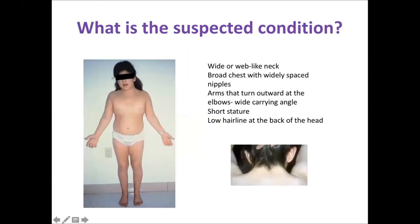Another commonly seen condition: this child has widely spaced nipples, webbed neck, wide carrying angle, short stature, and low posterior hairline. When children — especially girls — present with primary amenorrhea and these features, we can clinically suspect Turner syndrome and refer for genetic testing.